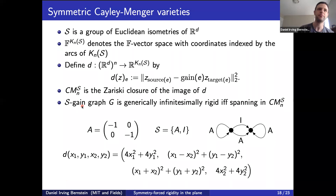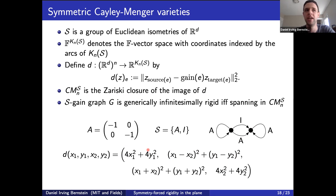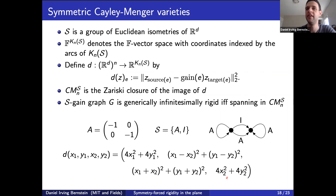Here is an example. If S is the group generated by the 180-degree rotation and we have two points, the resulting Cayley-Menger variety has three coordinates: one for the distance between the two points (the identity-labeled arc), one for the distance between x₁,y₁ and the point obtained by applying rotation a to x₂,y₂, and one for the distance between x₂,y₂ and the point obtained by applying a to x₂,y₂.